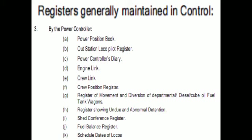Registers generally maintained in control by the Power Controller: (A) Power position book. (B) Outstation local pilot register. (C) Power controller's diary. (D) Engine link. (E) Crew link. (F) Crew position register. (G) Register of movement and diversion of departmental diesel, lube oil, and fuel tank wagons. (H) Register showing undue and abnormal detention. (I) Shed conference register. (J) Fuel balance register. (K) Schedule dates of locos.